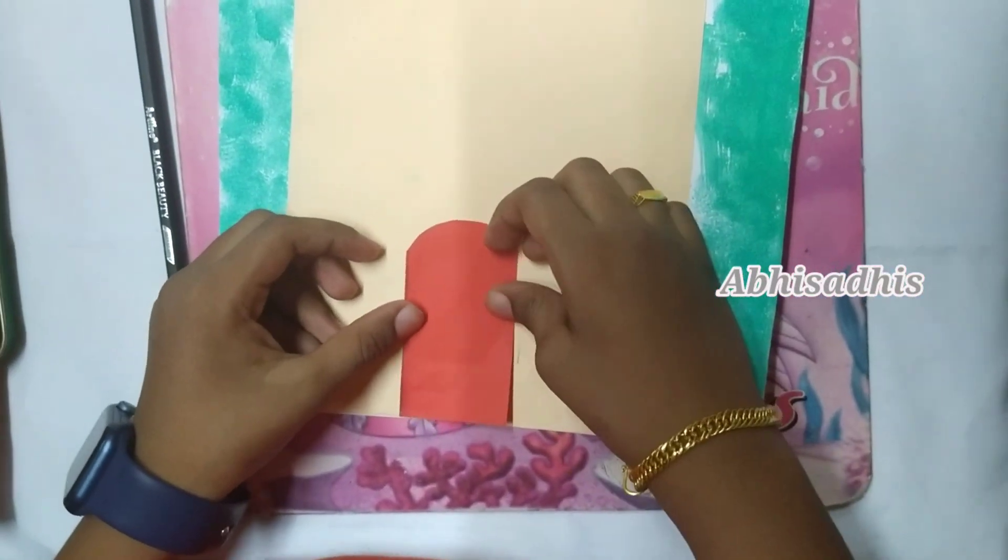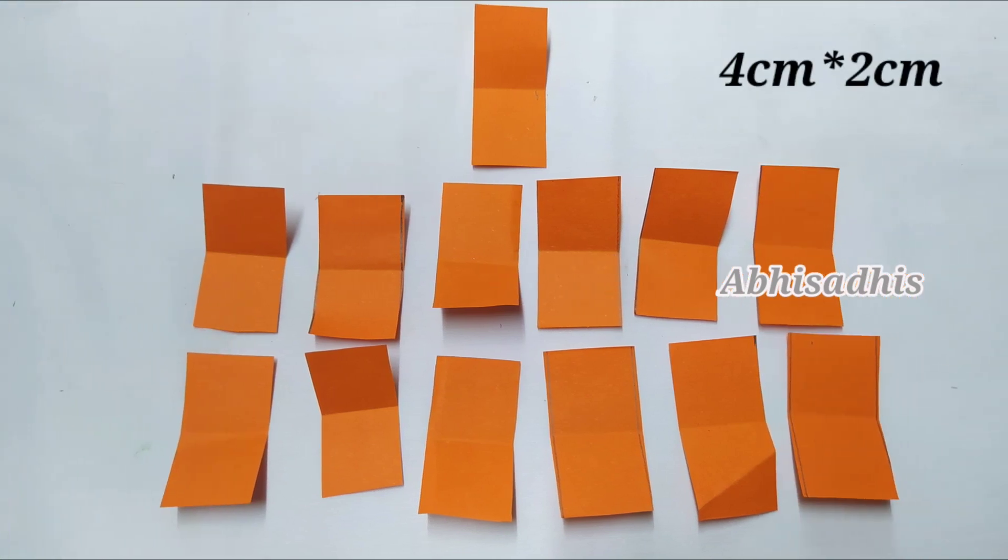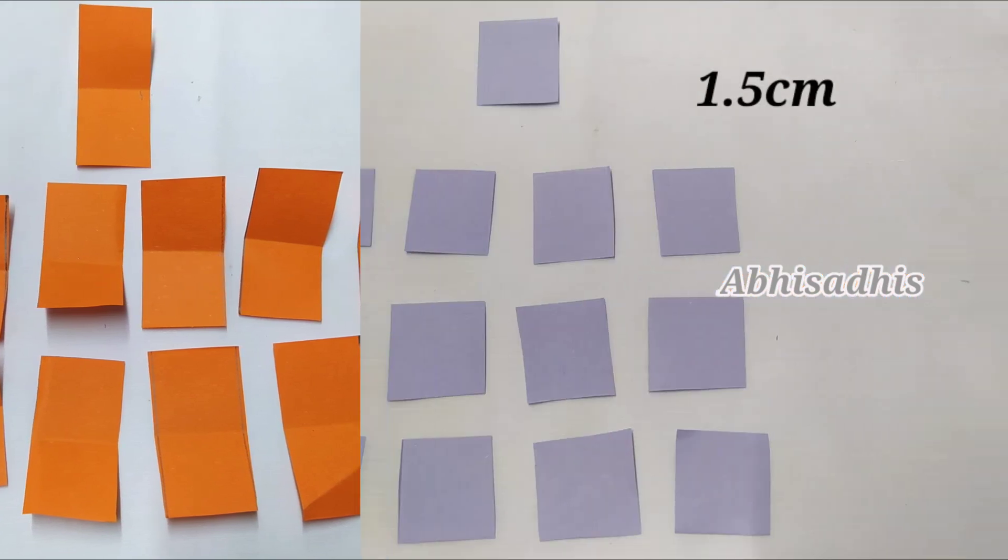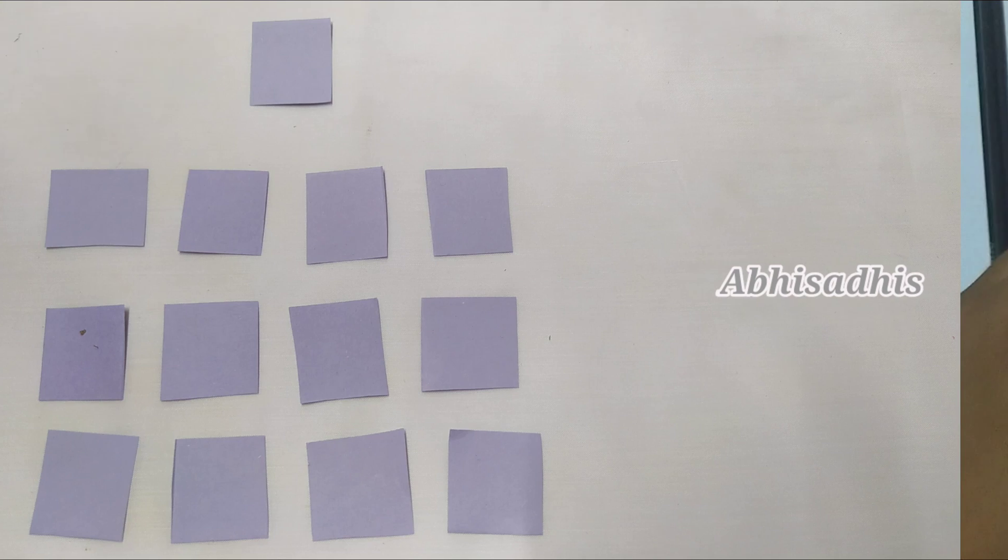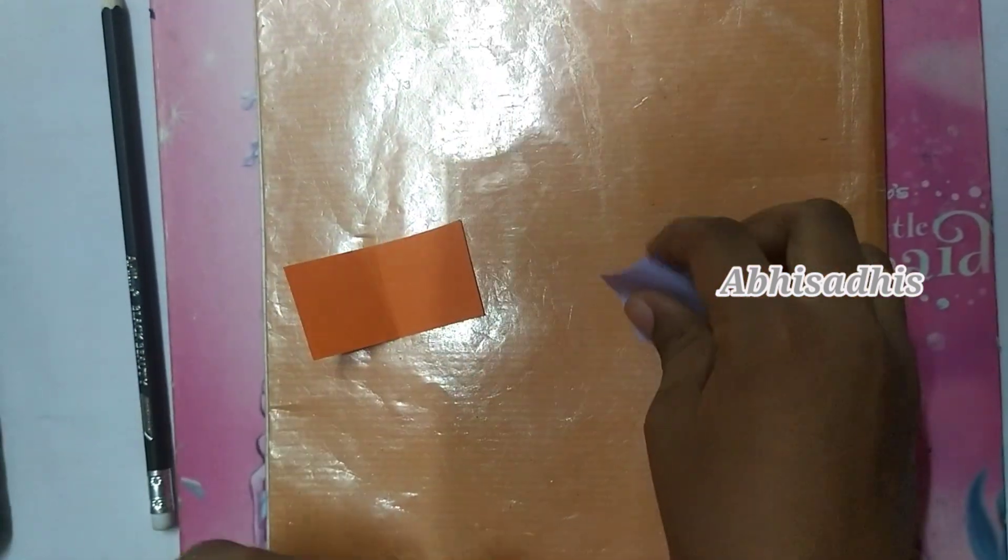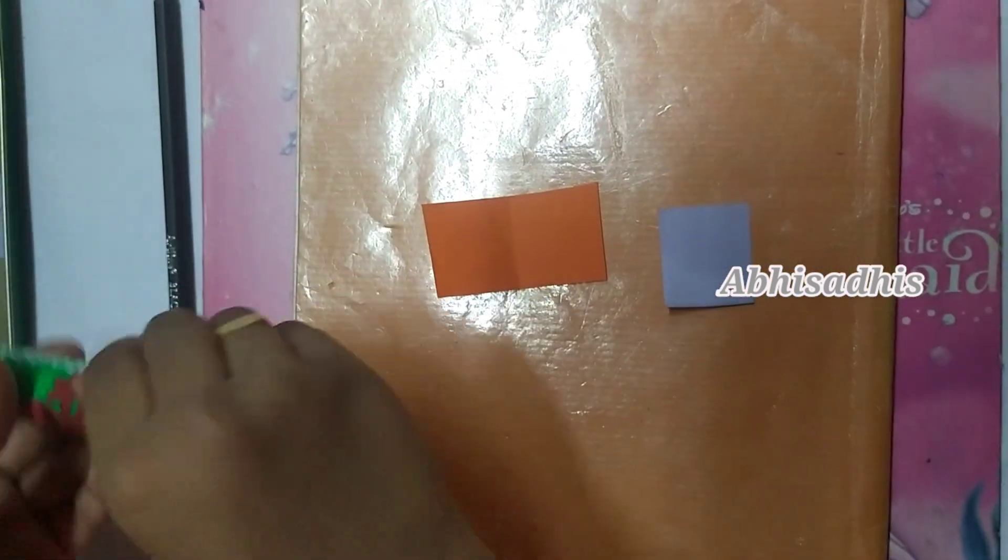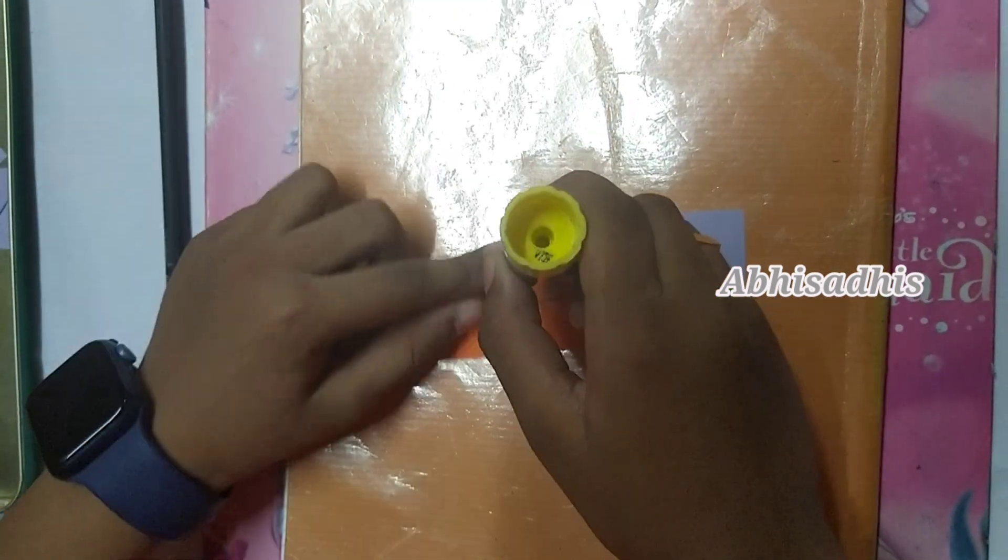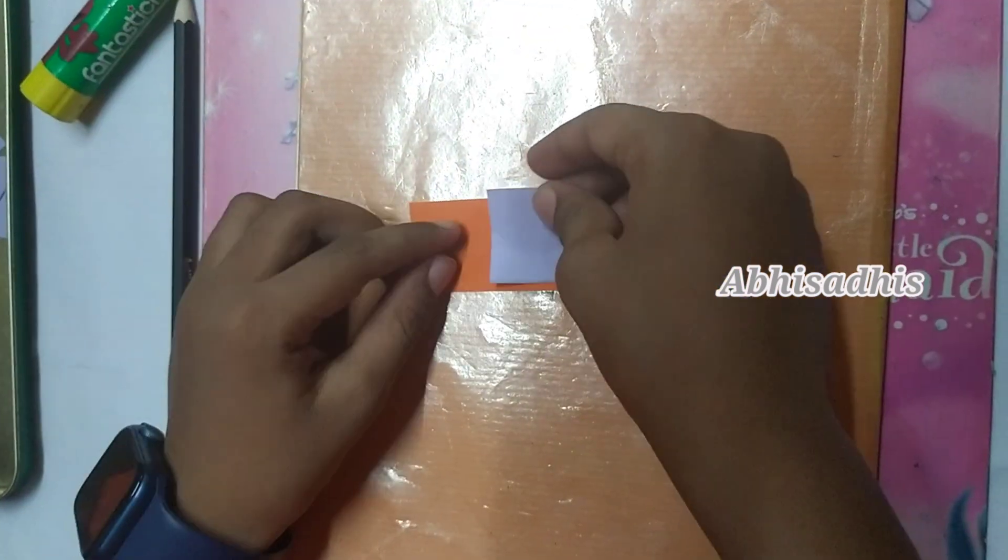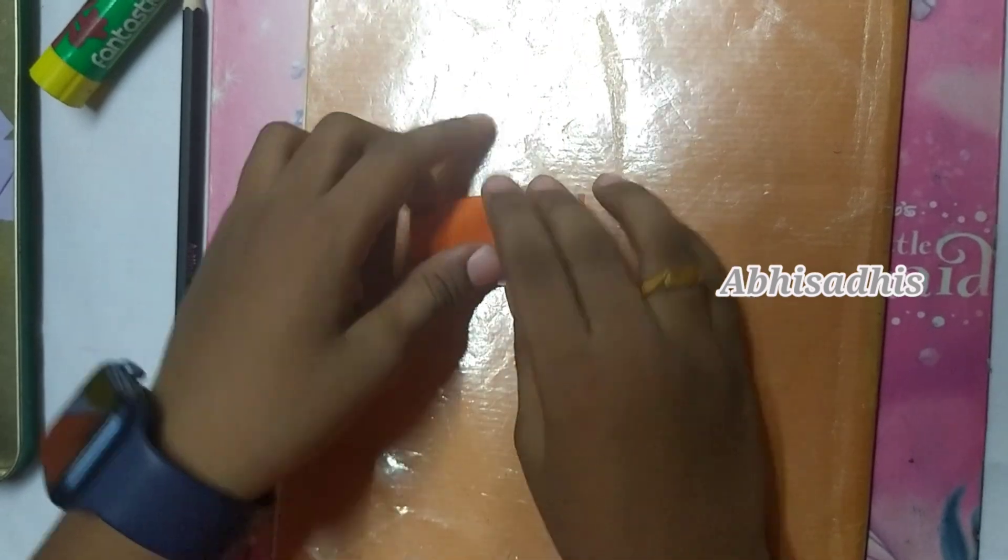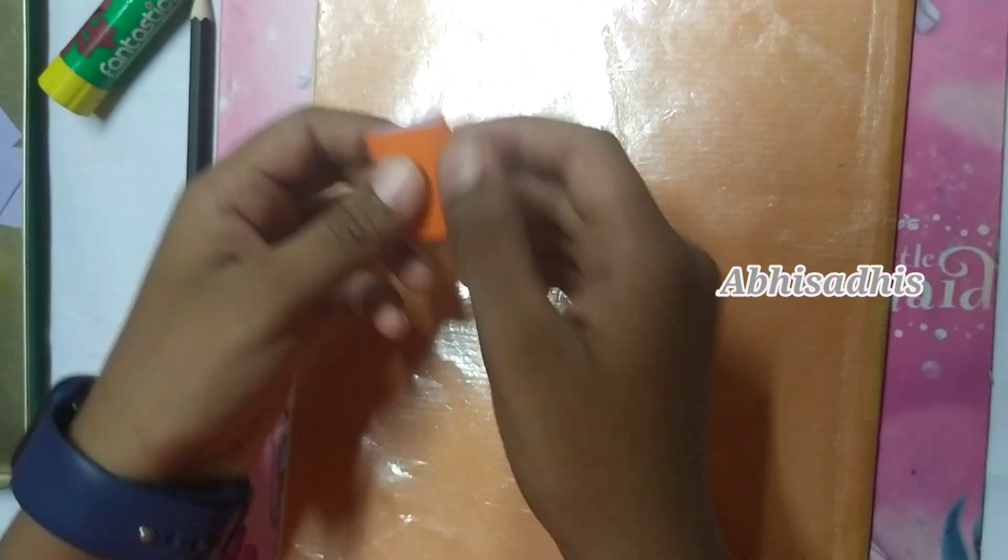After that cut out 13 strips from a colored paper of 4 by 2 cm. Now cut out 13 strips of 1.5 cm from a different colored paper. Now paste the strip of 1.5 cm on top of the strip of 4 by 2 cm, and paste the rest of them as shown.